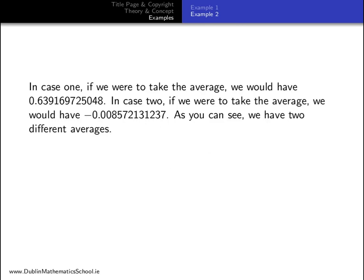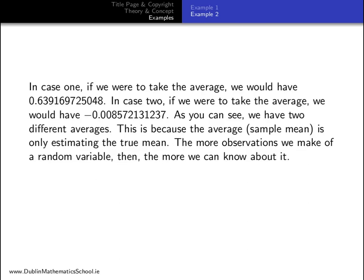As you can see, we have two different averages. This is because the average, or sample mean, is only estimating the true mean. The more observations we make of a random variable, then the more we can know about it. In this case, the mean.